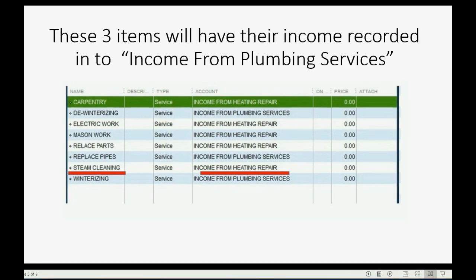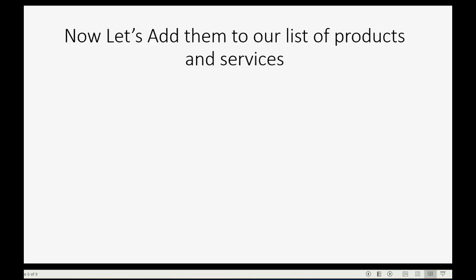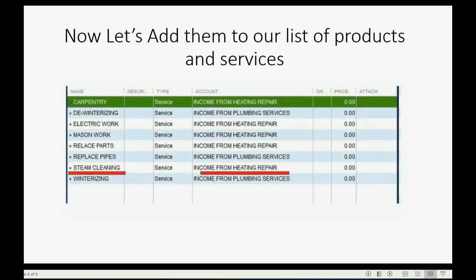You may notice that these three items — Dewinterizing, Replacement Pipes, and Winterizing — will have their income tracked and categorized into the income account called Income from Plumbing Services. And that means every time we list them on an invoice and record the invoice, the money amounts for these items will get recorded into those income accounts. Now let's add to our list of products and services these items with the names on the left connected to the income accounts on the right.